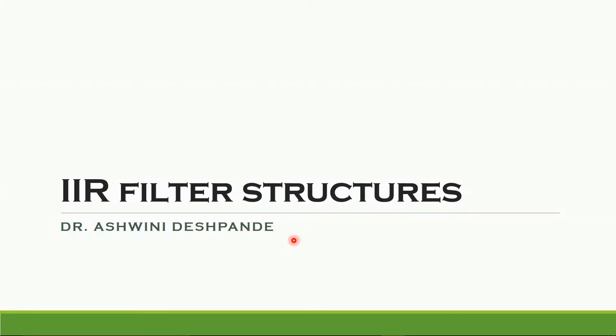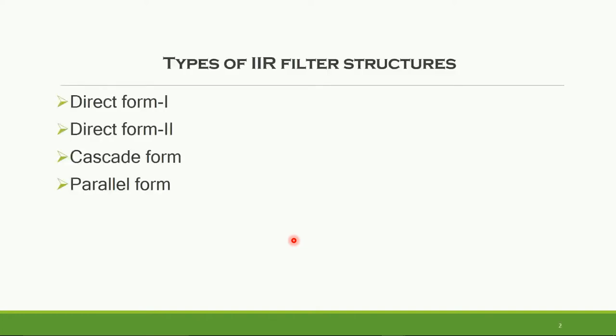Hello, I am Dr. Ashwini Rishpande and in this video I will explain IIR filter structures. There are four types of IIR filter structures: Direct Form 1, Direct Form 2, Cascade Form, and Parallel Form.